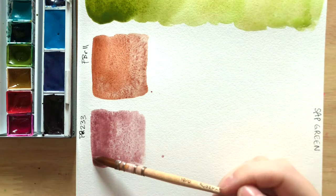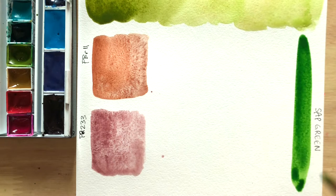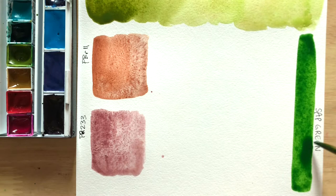When swatched next to Potter's Pink, you can clearly see that although it's a brown color, it does lean orange, whereas Potter's Pink looks almost like a granulating red next to it.